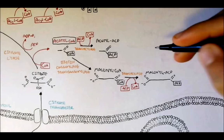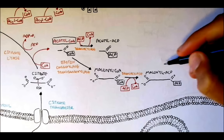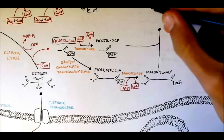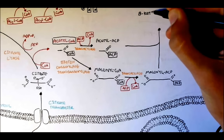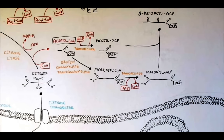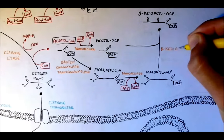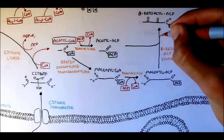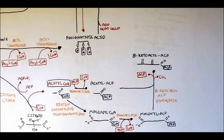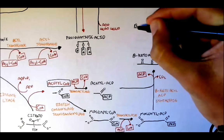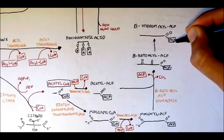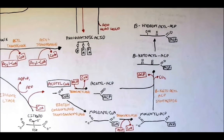Malonyl-ACP and acetyl-ACP combine together to form beta-ketoacyl-ACP by the enzyme beta-ketoacyl synthetase. One ACP and a carbon dioxide group are removed — this is a condensation reaction. The two-carbon addition from malonyl and acetyl-ACP is a four-step reaction process: condensation, reduction, dehydration, and reduction.